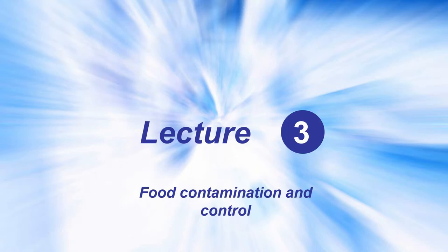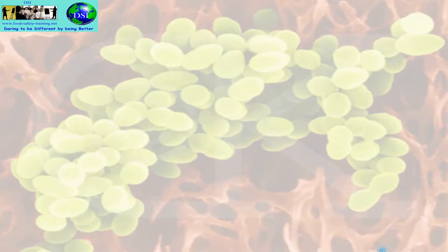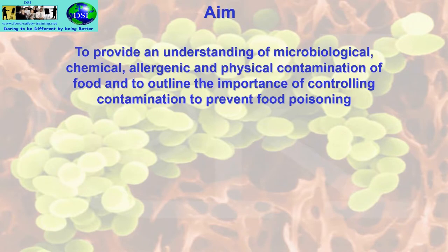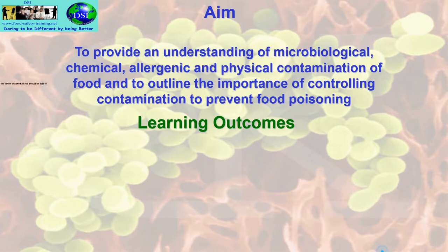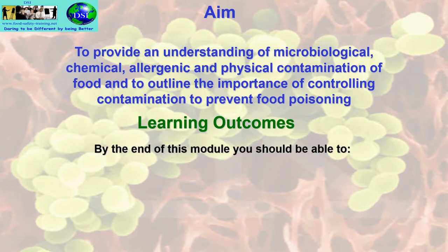This is lecture three: Food Contamination and Control. The aim of this unit is to provide an understanding of microbiological, chemical, allergenic and physical contamination of food, and to outline the importance of controlling contamination to prevent food poisoning.